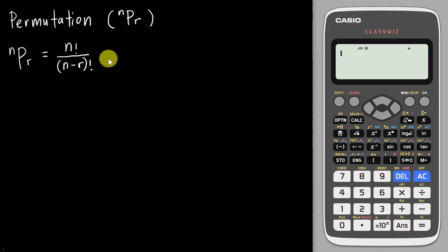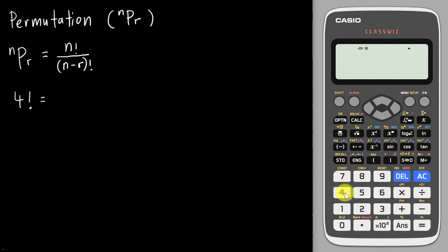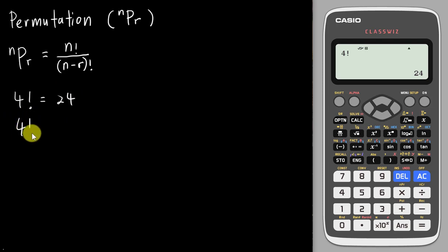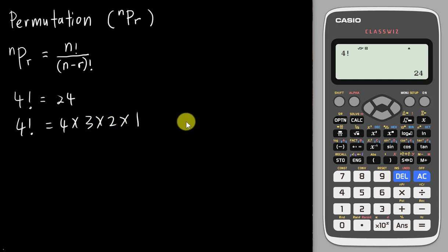There are several things you need to understand — first, the meaning of factorial. For example, if you have 4 factorial, you can just type 4 and then shift on the calculator to get the factorial symbol. The calculator will tell you it's 24. What 4 factorial really means is 4 × 3 × 2 × 1, which is why you get 24.